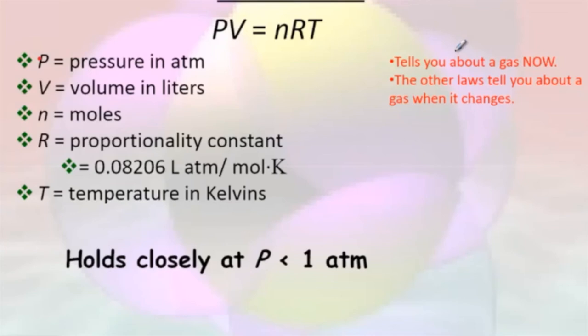So P is for pressure. Pressure is going to be in a unit called atmospheres. V, that's your volume. Volume is going to be in liters. N stands for moles. Guess what guys, moles are back. R is a constant. It's the ideal gas constant. It's always going to be 0.08206. And then it's got all these crazy units behind it, but that's always going to be its value. And then T is for temperature. And temperature must be in Kelvin.